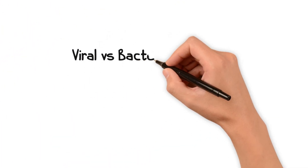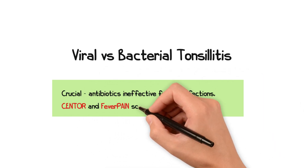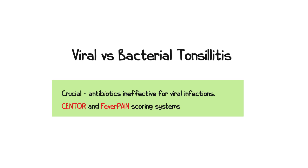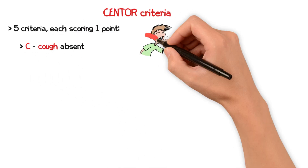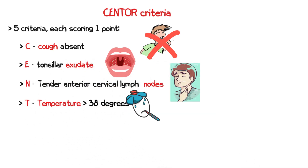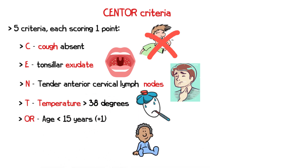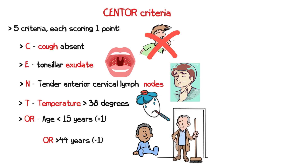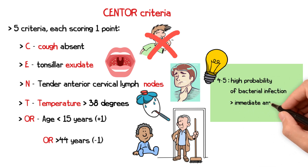Distinguishing between bacterial and viral tonsillitis is crucial, as antibiotics are ineffective for viral infections. The Centor and FeverPAIN scoring systems assist in this differentiation. With the Centor score, the likelihood of bacterial tonsillitis is assessed using five criteria, each scoring one point: absent cough, exudative tonsils, tender anterior cervical lymph nodes, a temperature over 38.0°C, and being under 15 years old (adds a point) or over 44 years old (reduces a point). A score of 4 to 5 suggests a high probability of bacterial infection, warranting immediate antibiotic treatment.